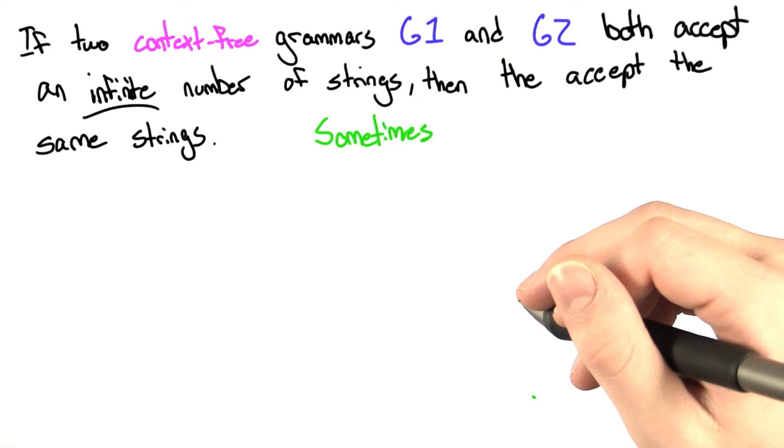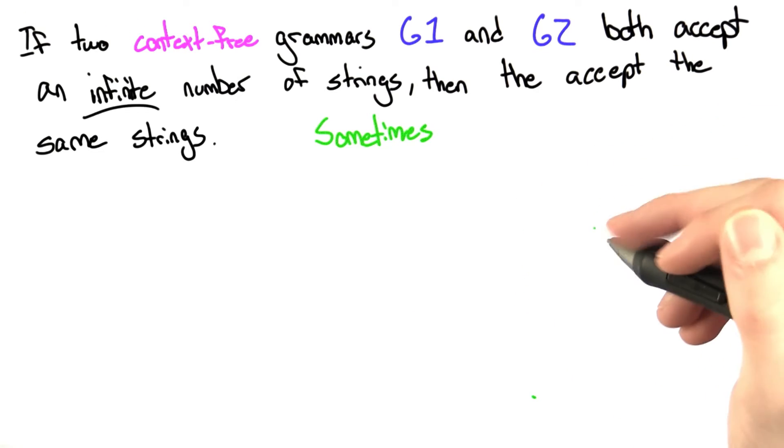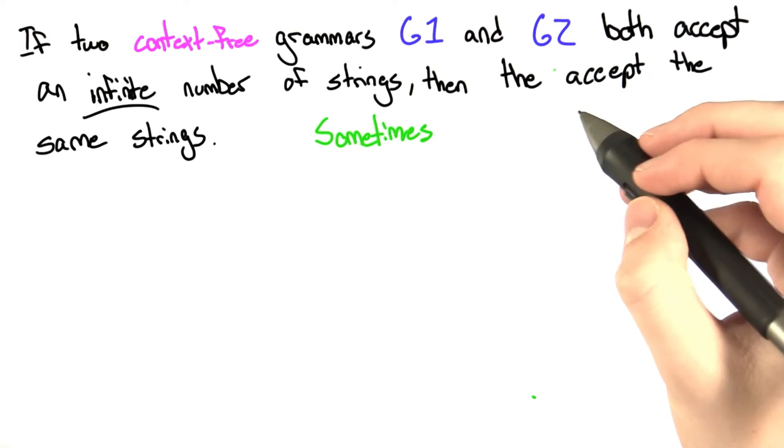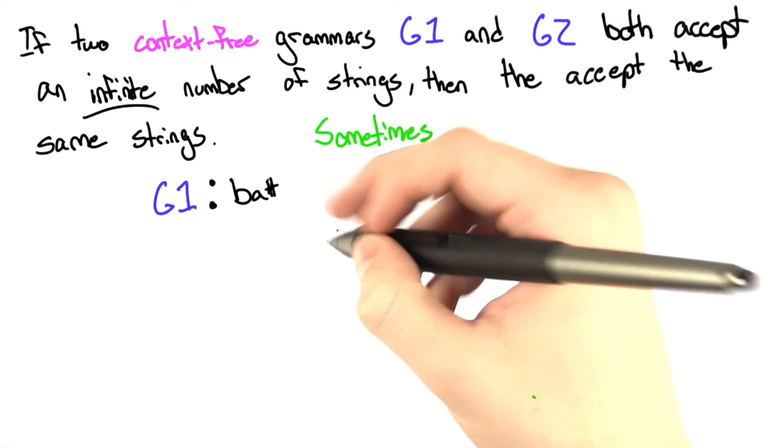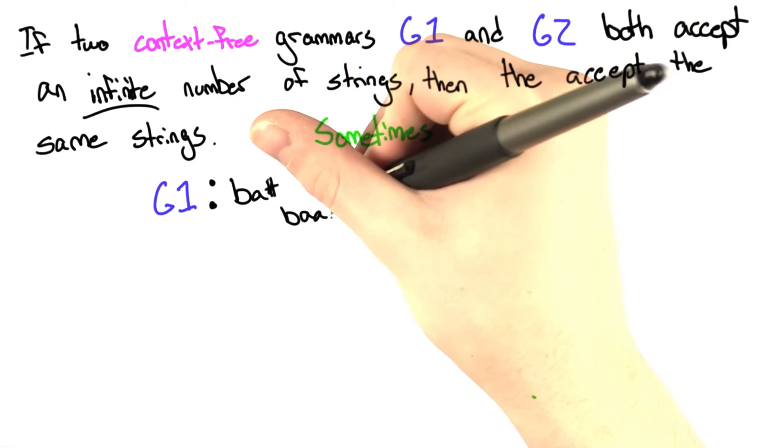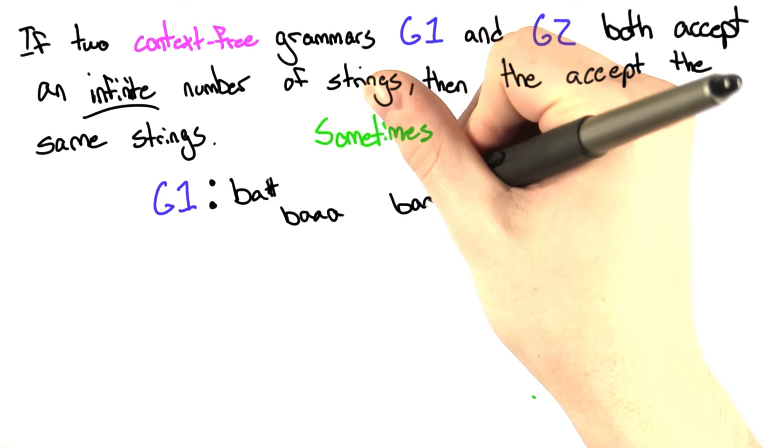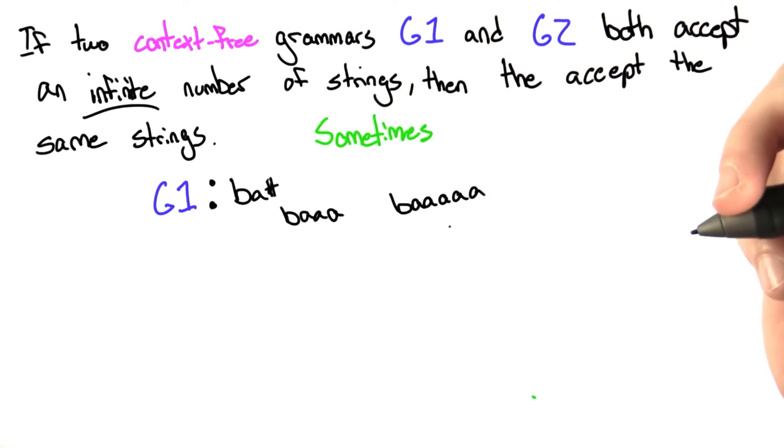Well, there's a straightforward example that shows that this is a statement that can be true, and that is when G1 and G2 are the same grammar. Let's say we have the language 'bah' that Wes likes to use in many examples. All right, so we have bah.